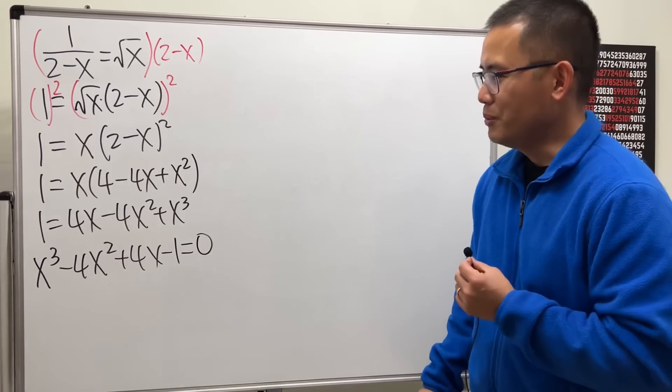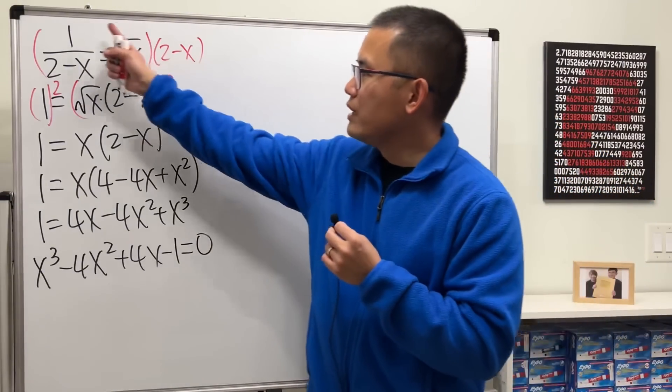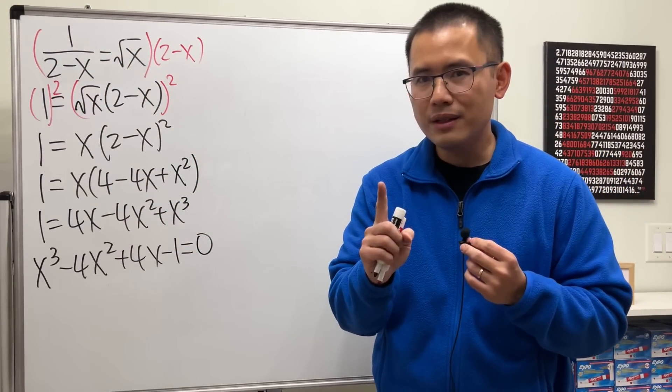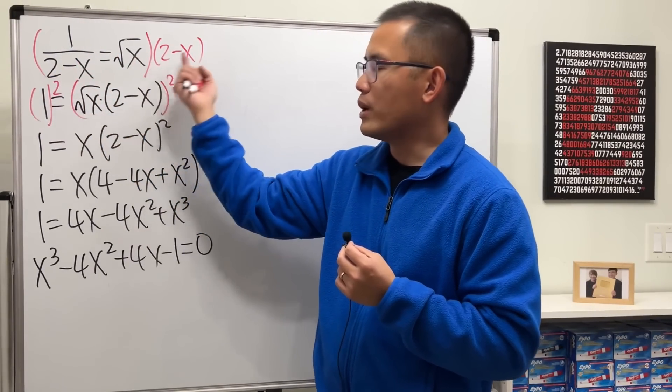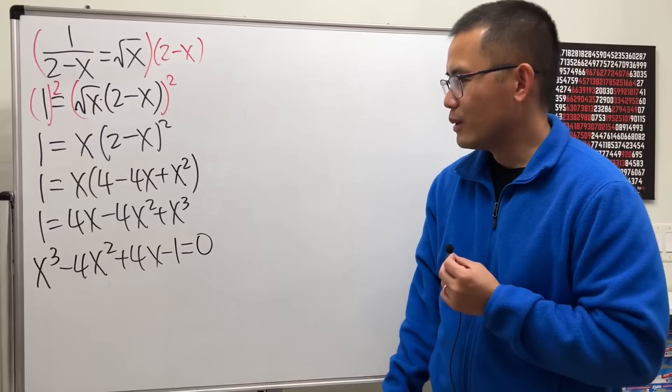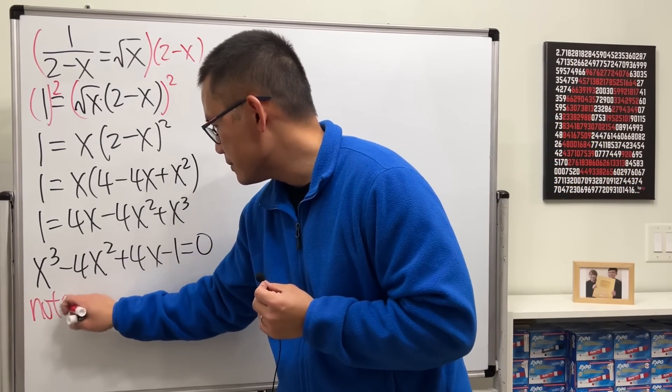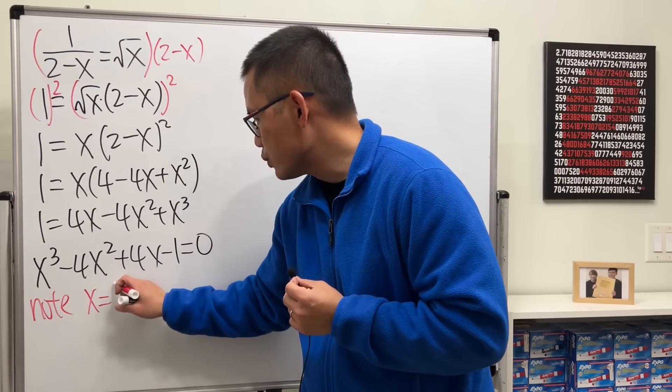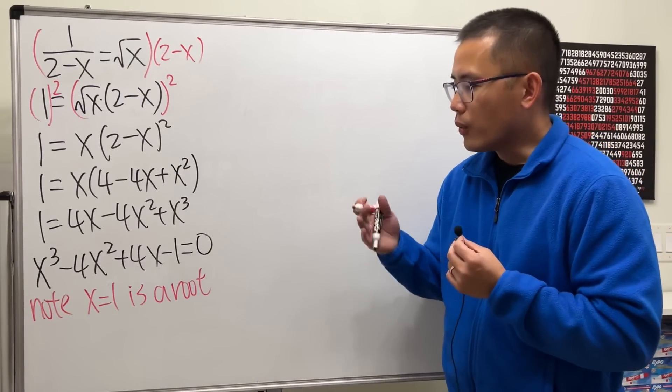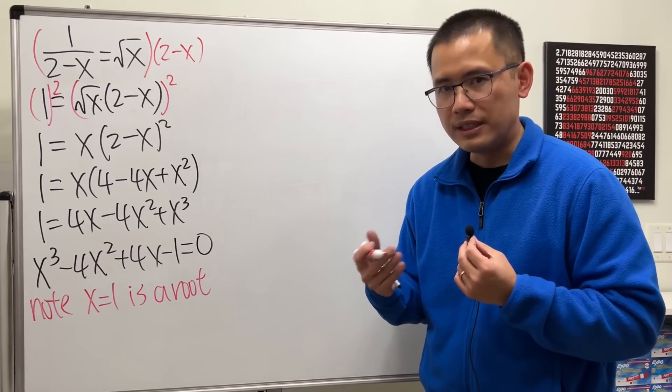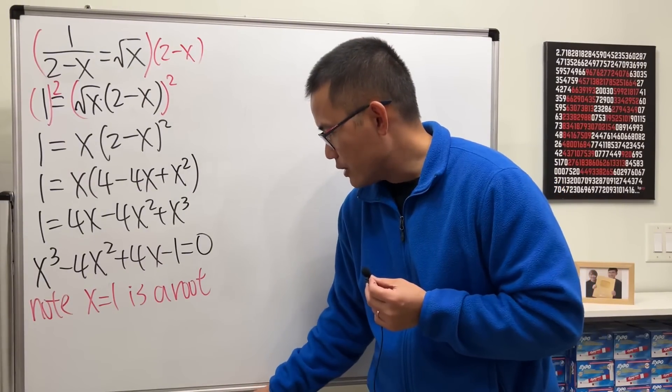Yeah, so we end up with a cubic equation. Now what though? Well, maybe you have noticed it earlier from the original equation. When x is equal to 1, it works. 1 over 2 minus 1 is 1. Square root of 1 is also 1. So 1 is a solution. And of course, it has to be the solution right here as well. So I will say, note that x equals 1 is a root. So that means we can go ahead and do synthetic division or polynomial division to factor this. So let me show you how it works.